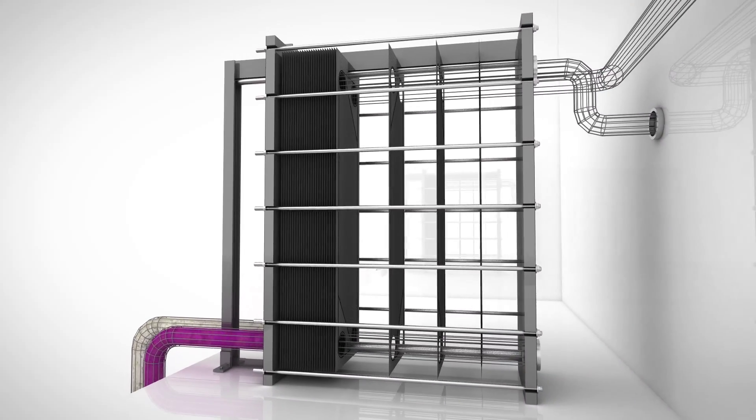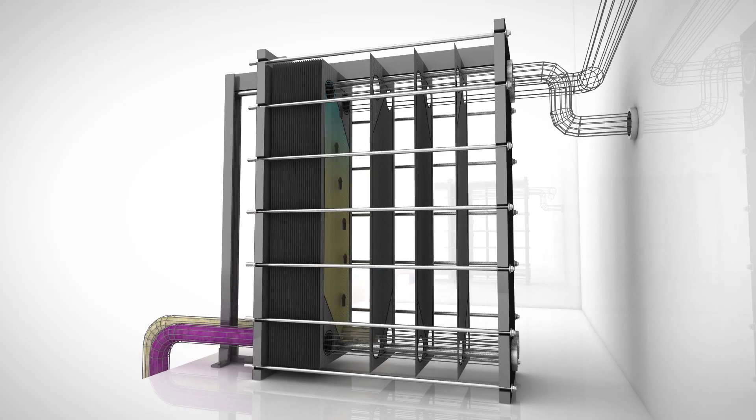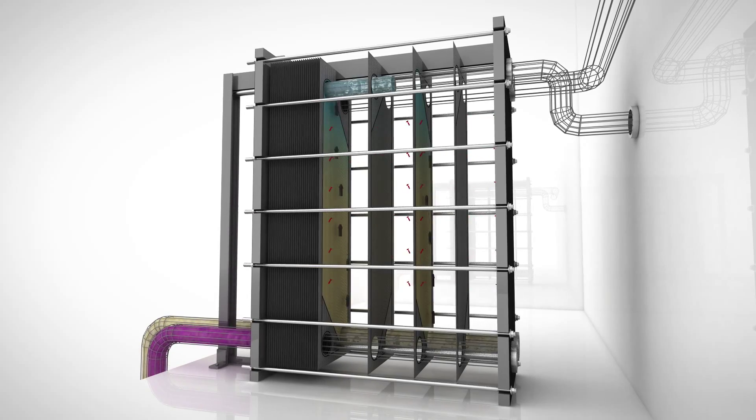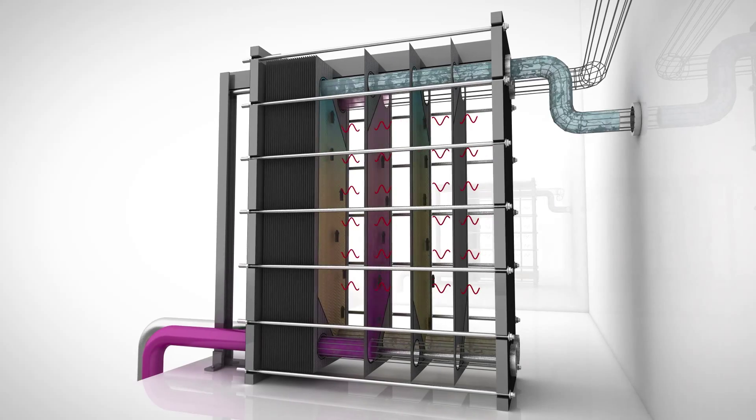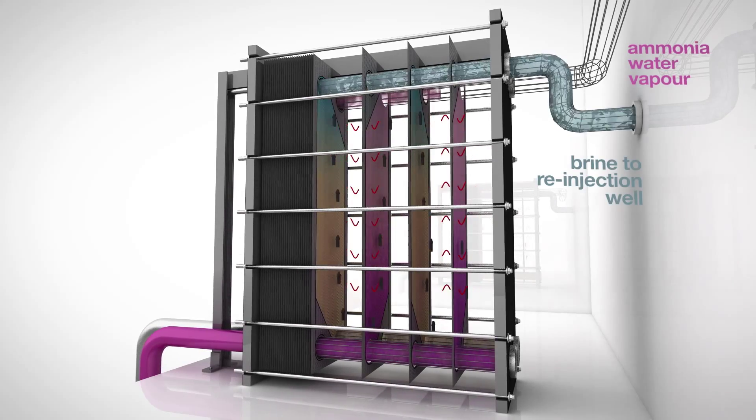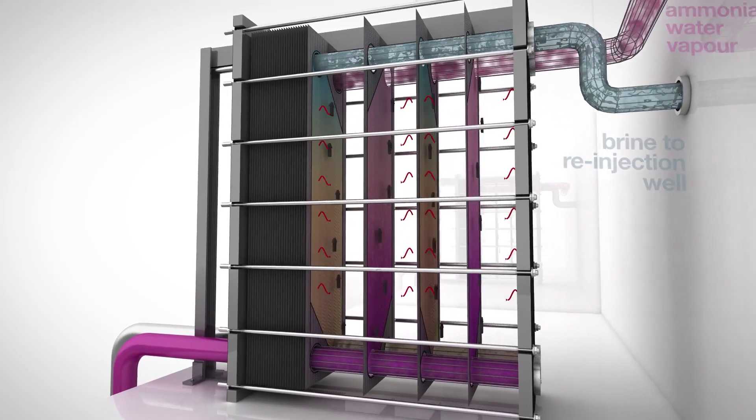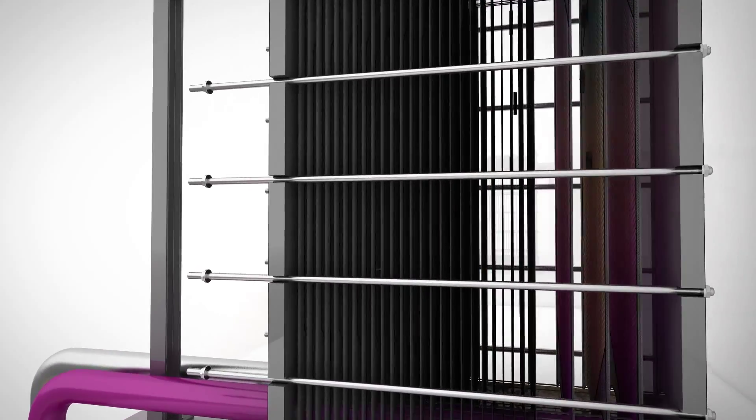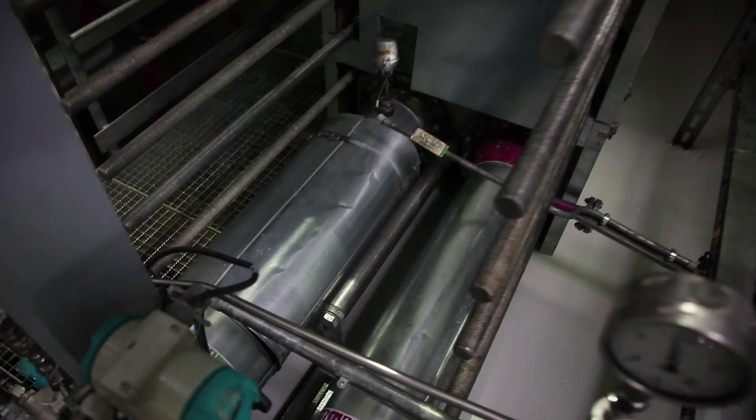Inside the evaporator, the geothermal brine flows between a series of plates. A mixture of pure ammonia and water is also flowing through a series of plates alternating with the brine. The ammonia-water mixture and geothermal brine flow on opposite sides of the plates to exchange heat through the plates. Without ever contacting or mixing with the brine, the ammonia-water receives heat from the brine and begins to boil. At this point, the brine has done its work and can be returned to the earth for reheating through the injection well.